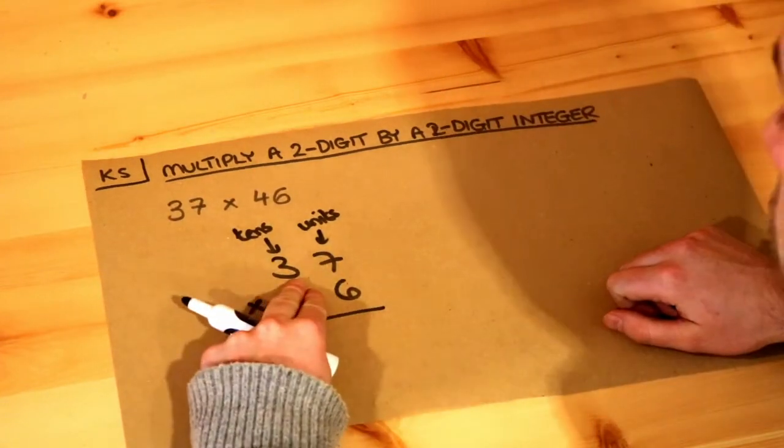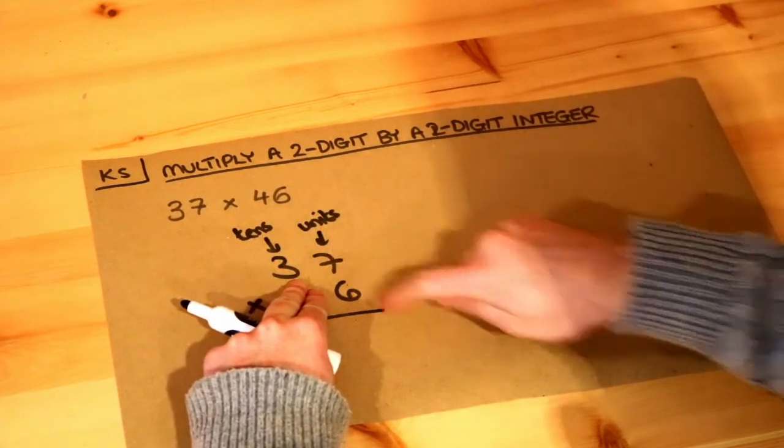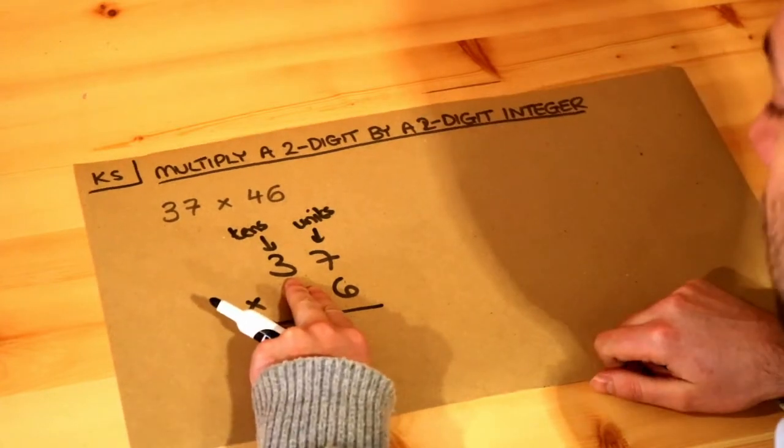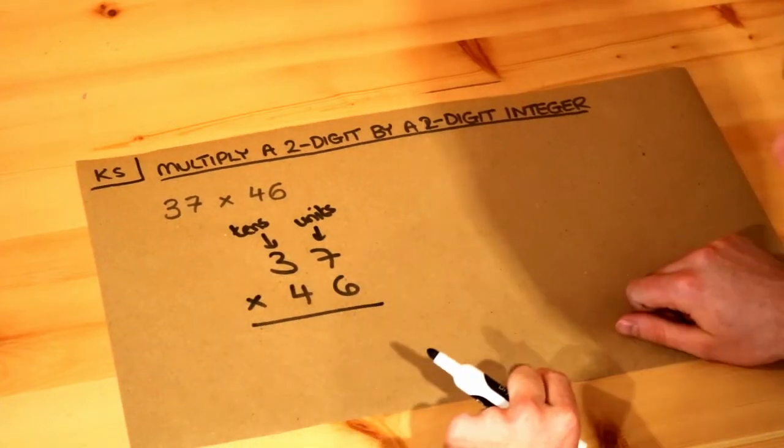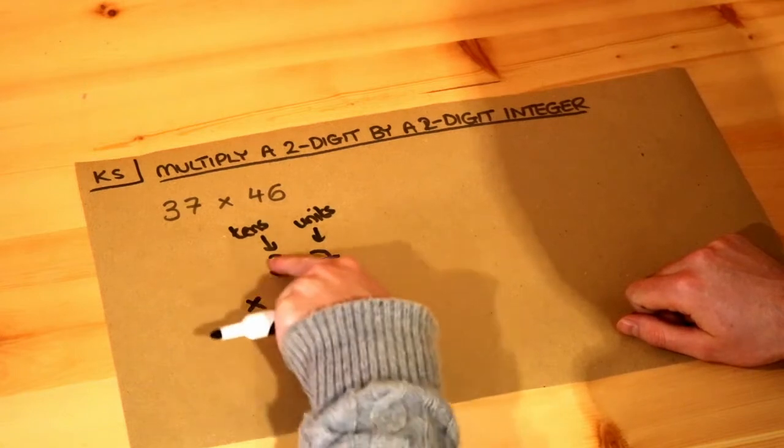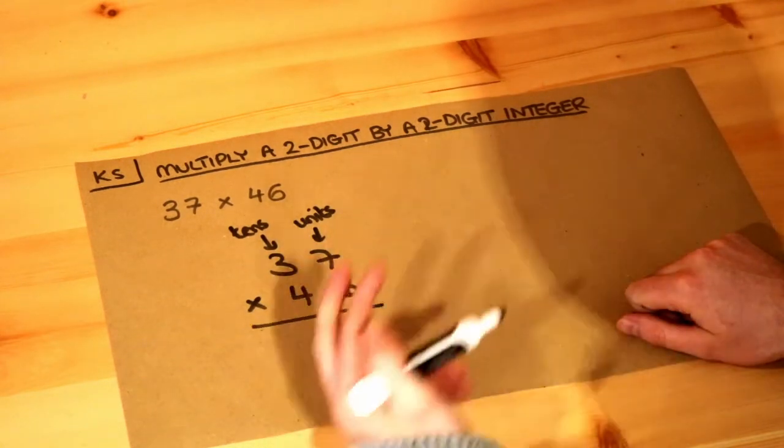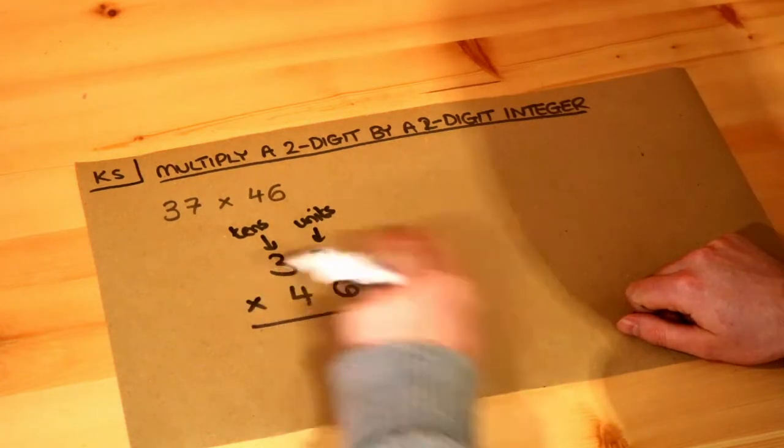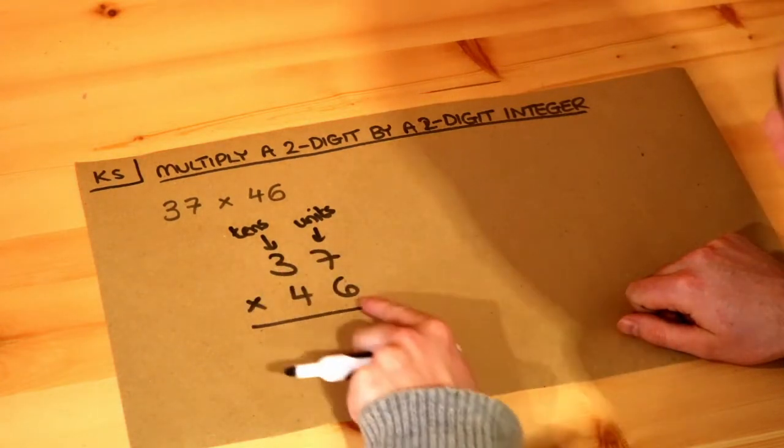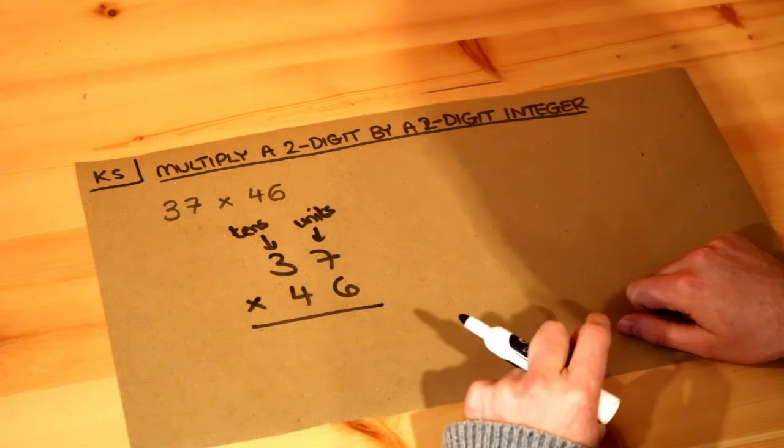First, we're going to ignore this 4 and just do 37 times 6. We can think of this multiplication as 6 lots of 37 plus another 40 lots of 37, because 46 lots of 37 is the same as 6 lots of 37 and another 40 lots of 37.